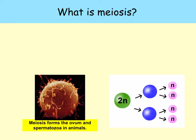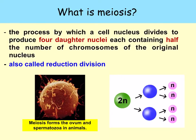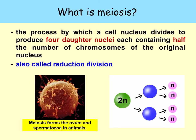Let's have a look at meiosis. We're going to look at meiosis in more detail at A level, but for the time being, you need to understand that it's the process by which a cell nucleus divides to produce four daughter nuclei, each containing half the number of chromosomes of the original nucleus. We also call this reduction division, and meiosis is used for the formation of gametes — for example, ovum and spermatozoa in animals.